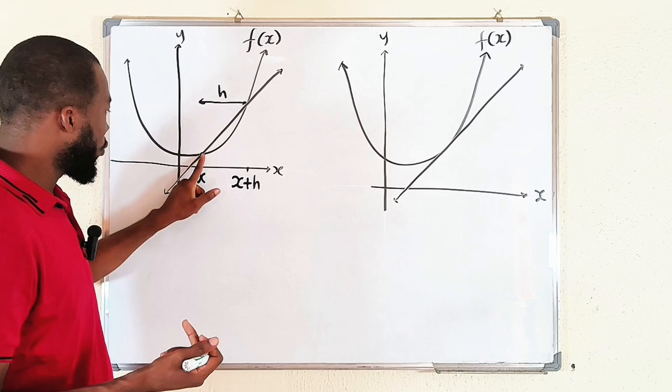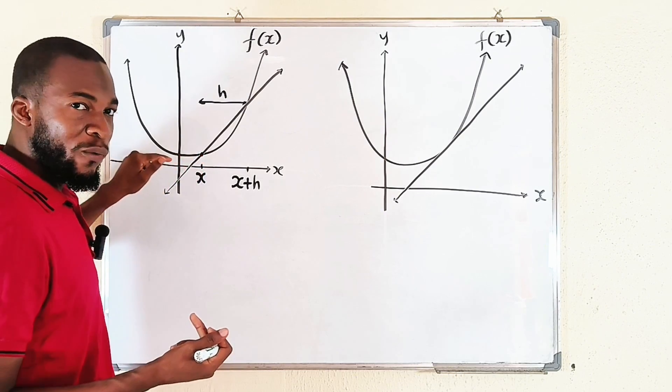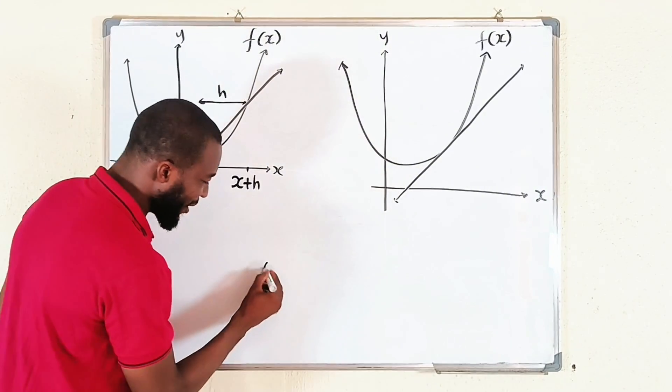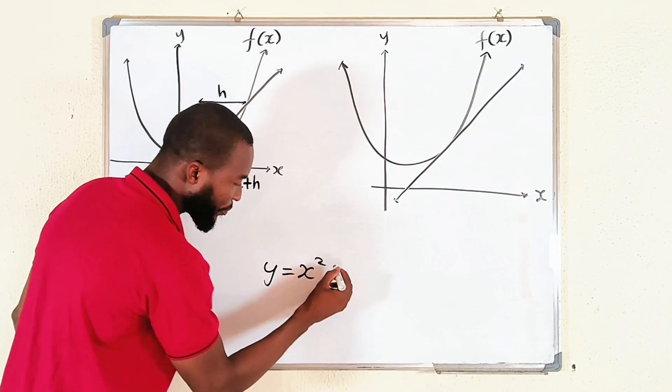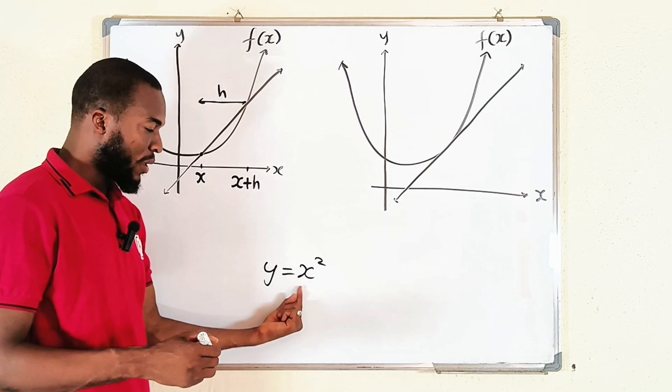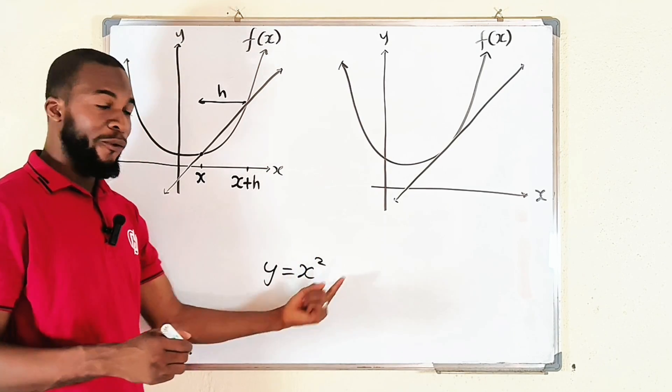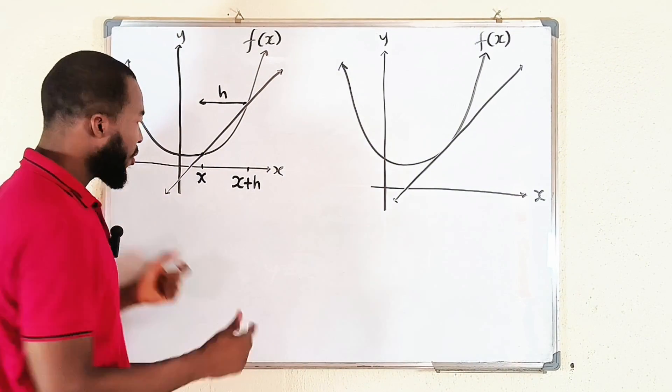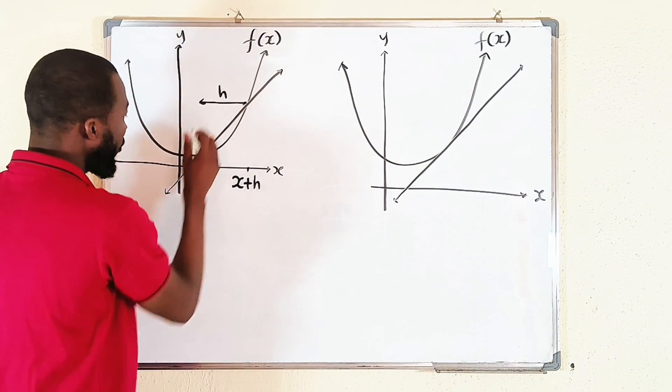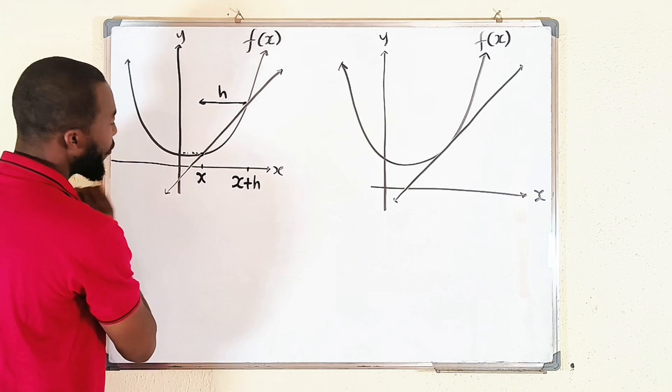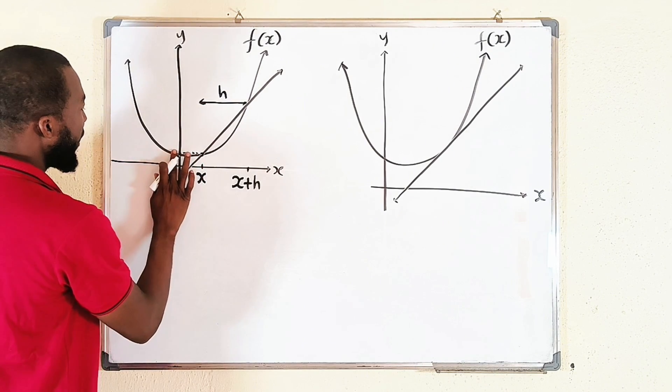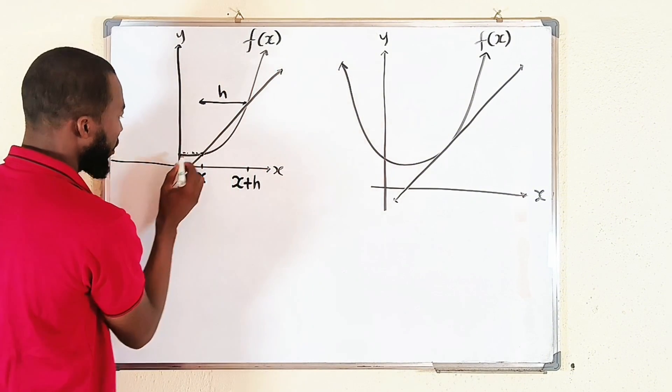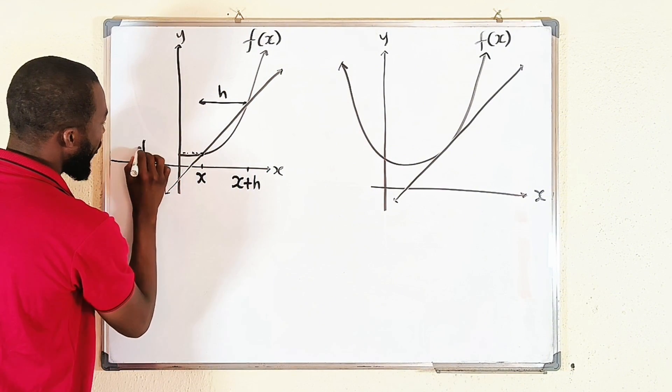For example, if this is 1, then this point, the corresponding value of y should be f of 1, whatever it is. For example, if the function is x squared, and we choose x to be 2, then y will be 4, because 2 squared is 4. But since we are using variables, not necessarily using numbers, so to plug in x into the main function, it will give us this corresponding value of y at that point. So this particular point should be f of x.